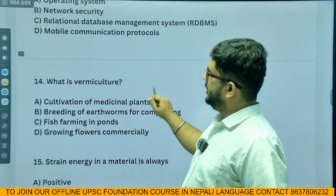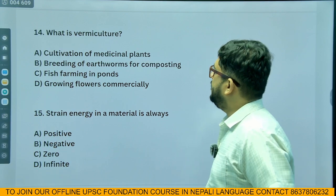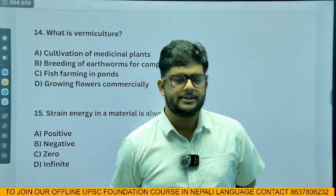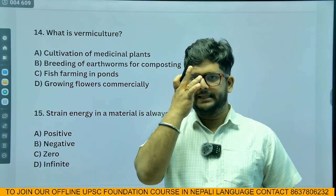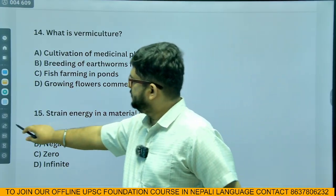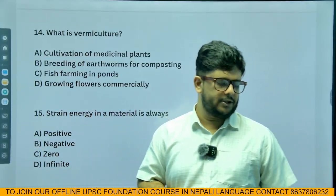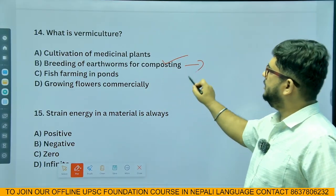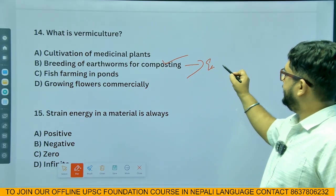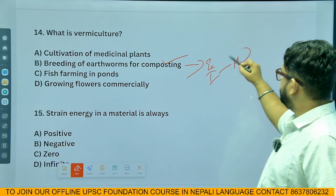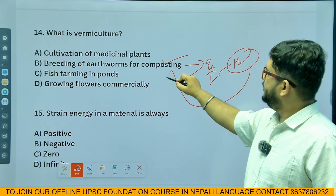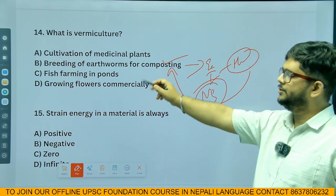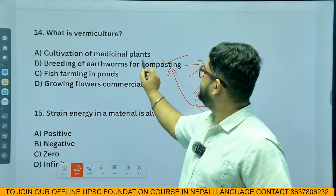Vermiculture: what is it? Vermiculture is the breeding of earthworms for composting. Earthworms break down inorganic matter into humus, which is very good for nutrients. This helps produce organic food or vegetables. So the answer is option B — breeding of earthworms for composting.